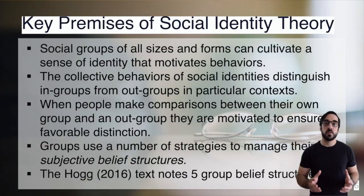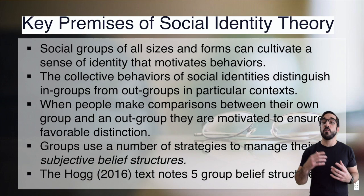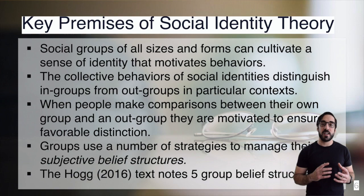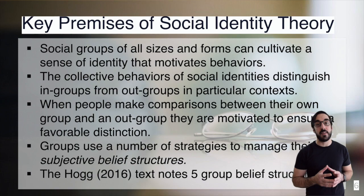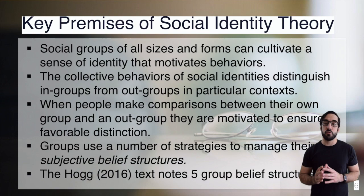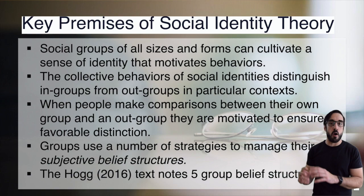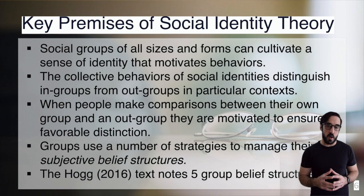The assumption of minimal groups helps us understand at least four key premises of social identity theory. The first is that groups can form of all sizes and all particular forms and still have a sense of social identity that motivates their behaviors and creates a certain sense of hyper-competitiveness. The second key premise is that the collective behaviors of individuals within those groups tend to distinguish themselves from those who do not share group membership — a sense of teamsmanship forms. 'I am an X, they are a Y; X's are like this, and Y's are like that.' Not only is your personal self-identity formed in that comparison, but also a contrast is made that helps structure the identity of others.